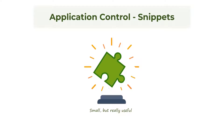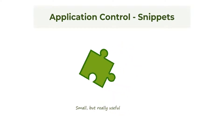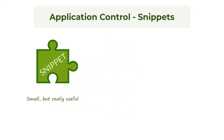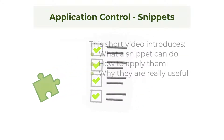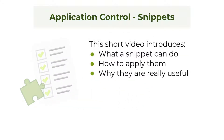Hi everyone and welcome. We are going to look at Application Control Snippets, a small but really useful piece. Snippets can save you valuable time in system configuration and auditing. They can improve the security and usability of your system and enable the sharing of best practice. This video summarizes the different types of snippets available, where and how they can be used, and why they are really useful.